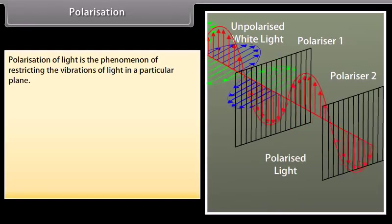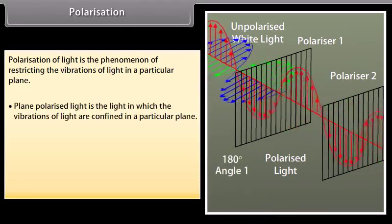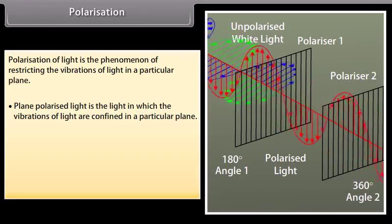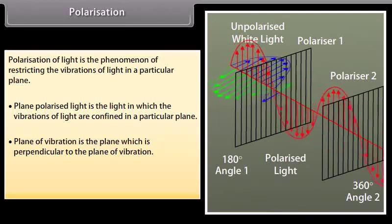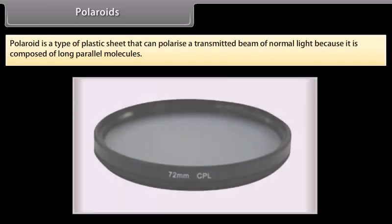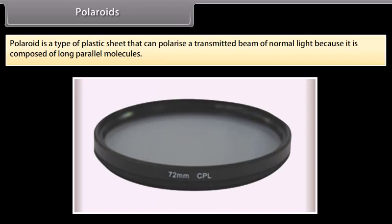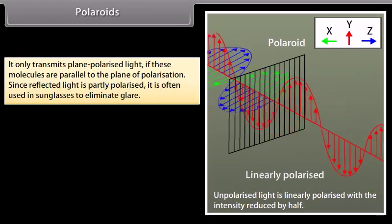Polarization of light is the phenomenon of restricting the vibrations of light in a particular plane. Plane polarized light is light in which the vibrations are confined to a particular plane. The polarizing angle is that angle of incidence at which the reflected light is completely plane polarized. A polaroid is a type of plastic sheet that can polarize a transmitted beam of normal light because it is composed of long parallel molecules. It only transmits plane polarized light if these molecules are parallel to the plane of polarization.